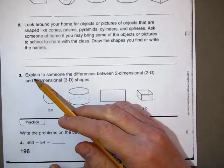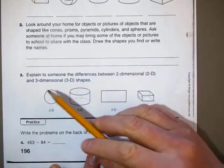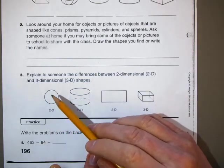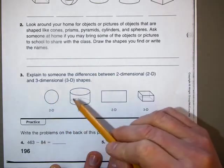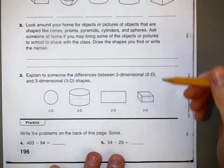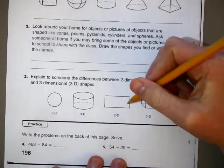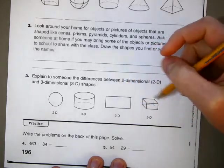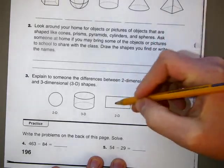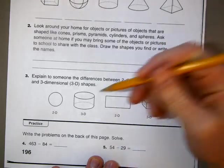For number three, you need to explain to someone at home the differences between two dimensional or 2D, and three dimensional or 3D shapes. You want to explain the difference between this one and this one. Try to include what you know about each of these shapes as you're explaining that. If it helps to write about it, you may also write an explanation on the back of the paper. What is a 2D shape, what's a 3D shape, and you can tell me about it.